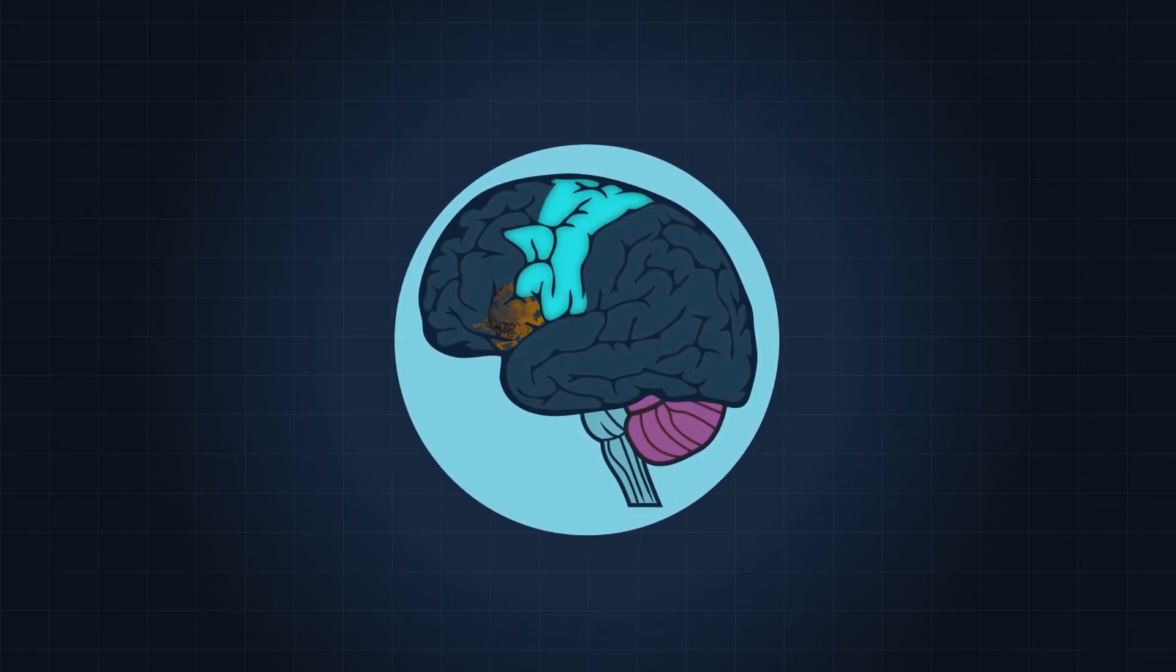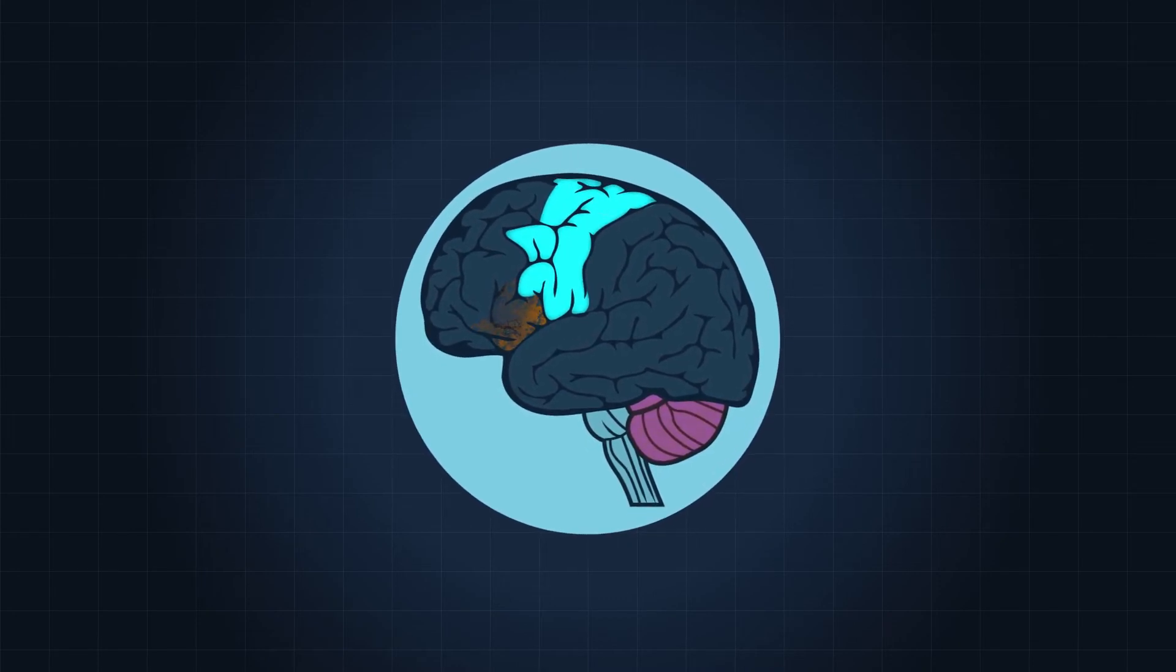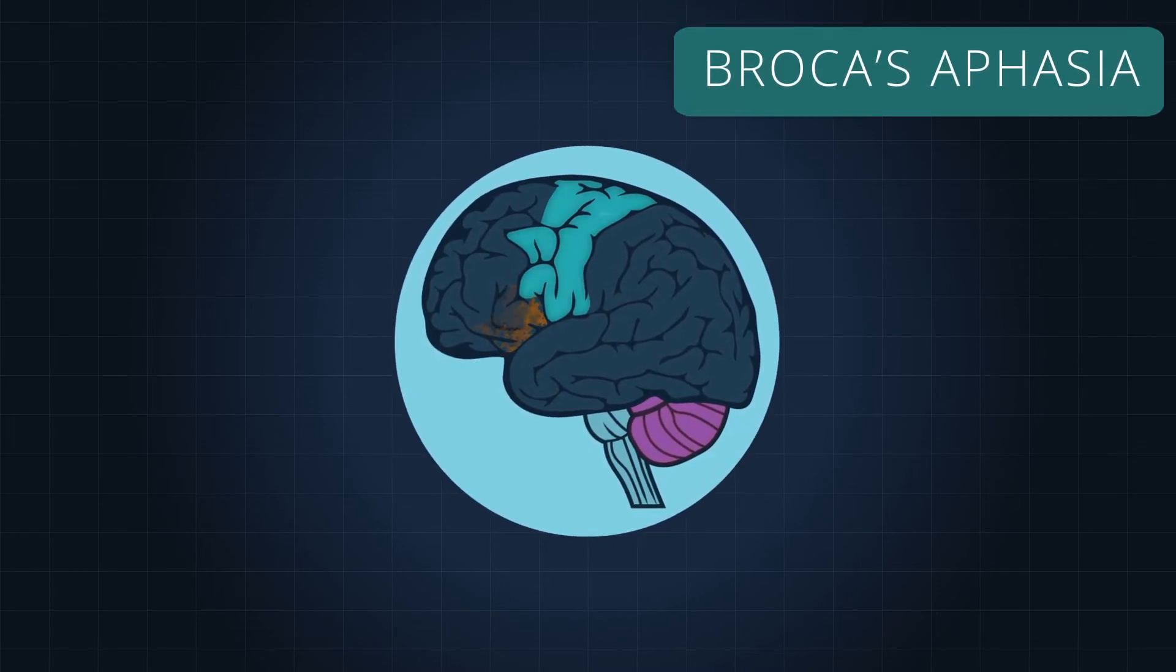If the Broca's area of the brain is damaged, you'll still know what to speak, but you'll have trouble generating the words. The condition is called Broca's aphasia.